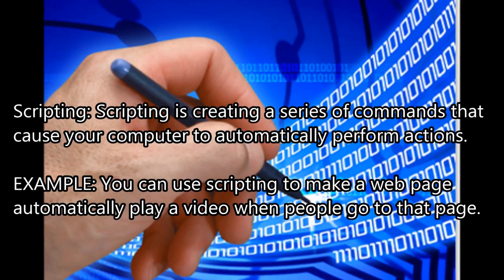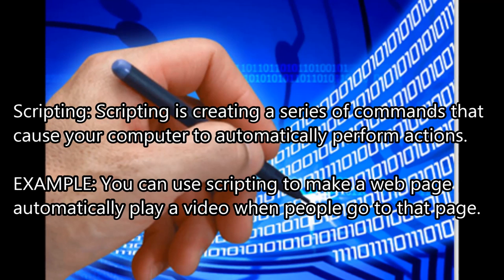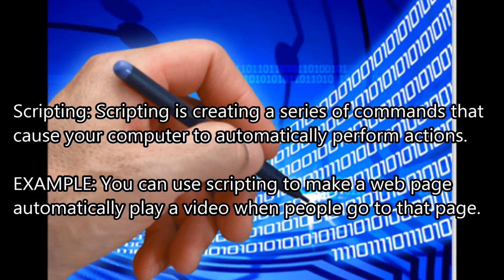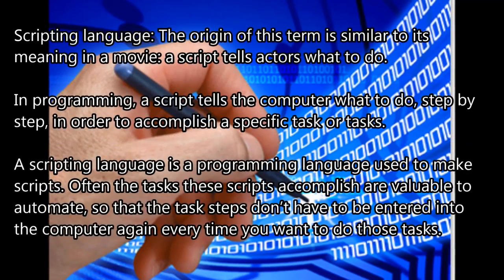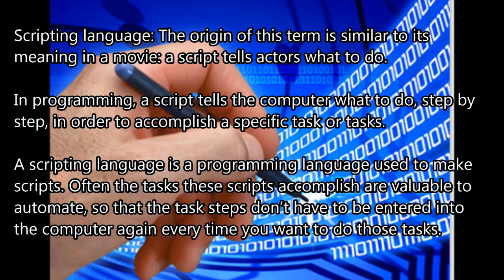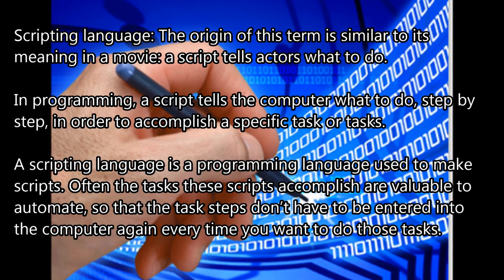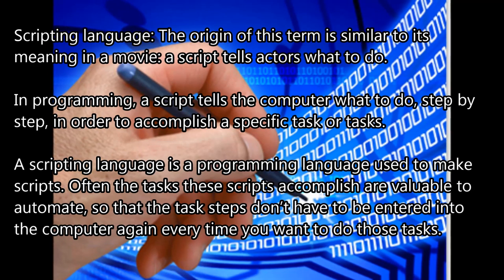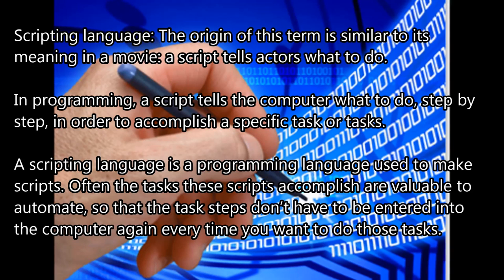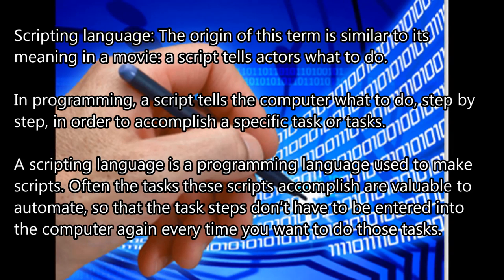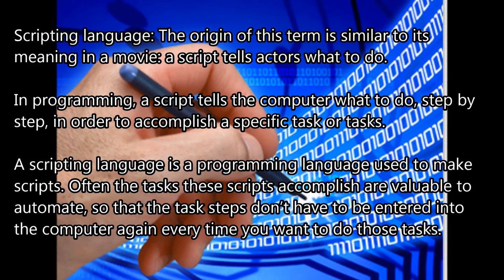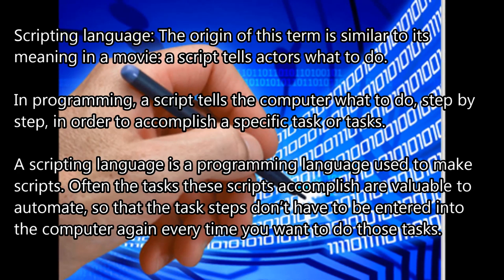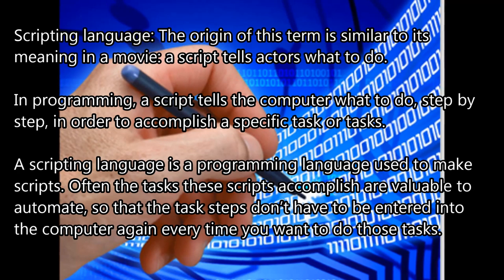Scripting — creating a series of commands that cause your computer to automatically perform actions. For example, you can use scripting to make a web page automatically play a video when people go to that page. A scripting language — the origin of this term is similar to its meaning in a movie. A script tells the actors what to do. In programming, a script tells the computer what to do, step-by-step, in order to accomplish a specific task. A scripting language is a programming language used to make scripts, and the tasks these scripts accomplish are often valuable to automate.